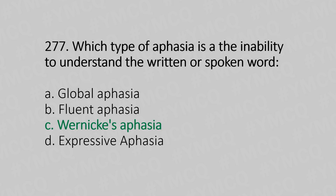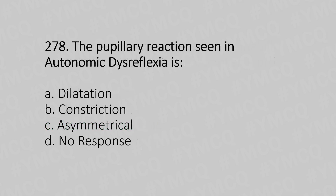Now let's move to question number 278. The pupillary reaction seen in autonomic dysreflexia is: Option A, dilation; Option B, constriction; Option C, asymmetrical; Option D, no response. And the answer is Option A, dilation.